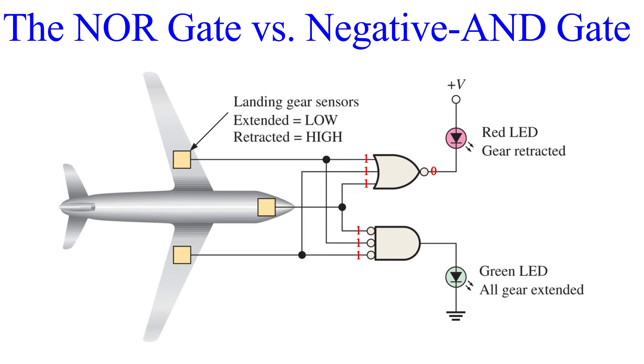At the same time, all those high signals get inverted to low signals before being sent through the AND gate. This is how the negative AND gate works. So with all or even just one of the landing gear sensors retracted, the green LED is off, indicating that the landing gear is not extended.